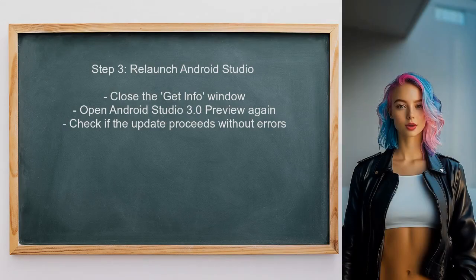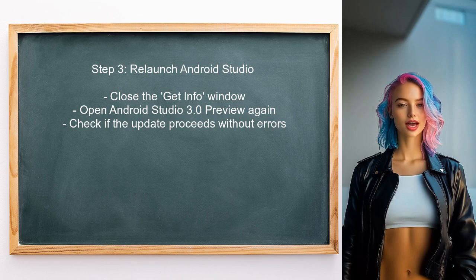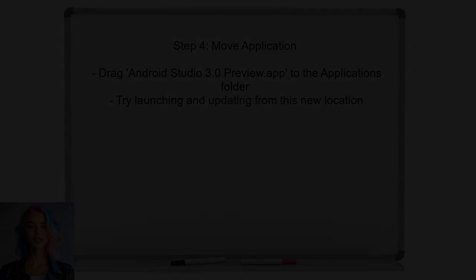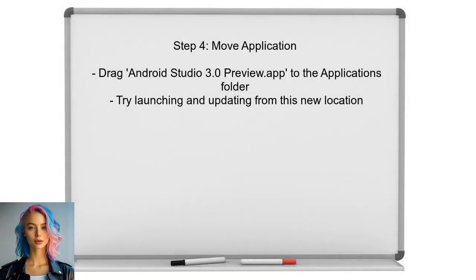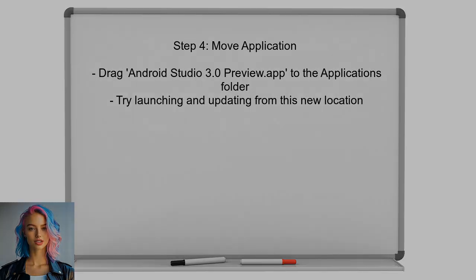After adjusting the permissions, the user should try launching Android Studio again — this time it should have the required access to update. If the problem persists, the user can try moving the application to a different location, such as the Applications folder, and then attempt the update again.